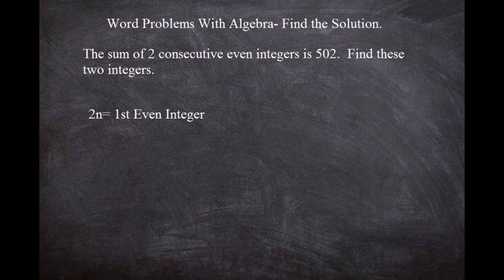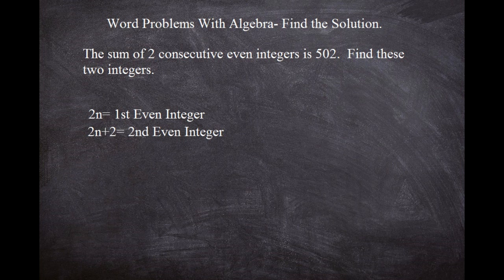All right, so if the sum of these two consecutive integers is 502, then the second integer—if the first one's 2n, the second integer after that would have to be 2n+2. Because if the first one was say 14, the second one would have to be 16. So no matter what, it would be plus two.